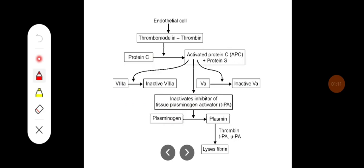This is the chart showing the fibrinolytic system. Endothelial cell, damaged endothelial cell produces thrombomodulin, which is going to bind to the thrombin, which is released into the circulation. This complex activates protein C to the activated protein C.